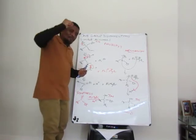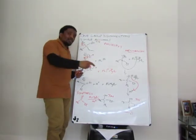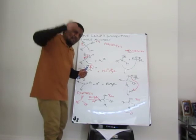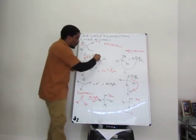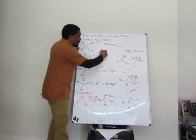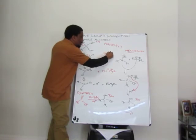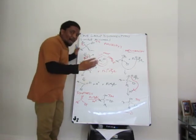So we choose the possibility that's going to give us the most stable carbanion of all those carbanions. This phenyl carbanion is the most stable. It is the most stable carbanion.